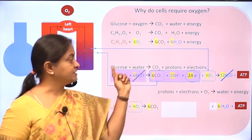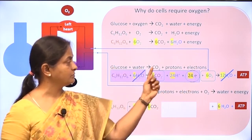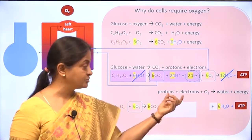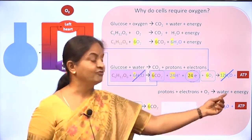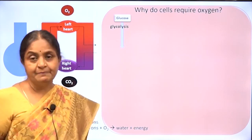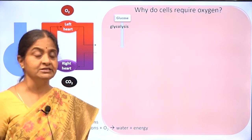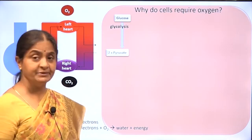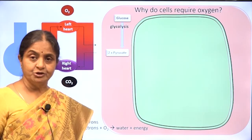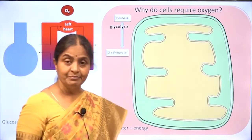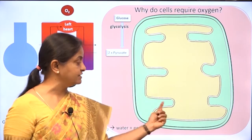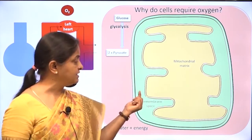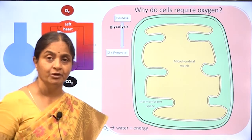We can write it more clearly: glucose undergoes hydrolysis — not glucose per se, but its metabolites — to form carbon dioxide, protons, and electrons. Protons and electrons then react with oxygen to form water and energy. Glucose undergoes a series of reactions termed glycolysis, where pyruvate is the end product. No oxygen is required here, and this happens in the cytoplasm. Pyruvate then enters the mitochondrion, which is a double-membranous structure with an outer membrane, an inner membrane, a mitochondrial matrix, and an intermembrane space.